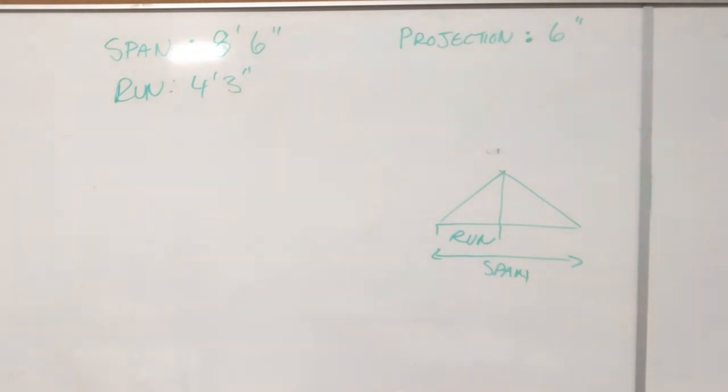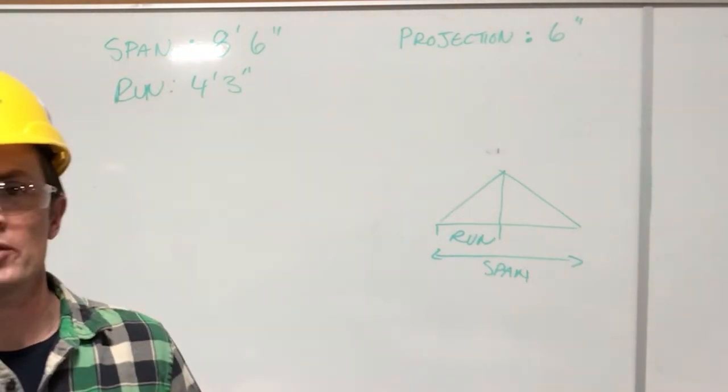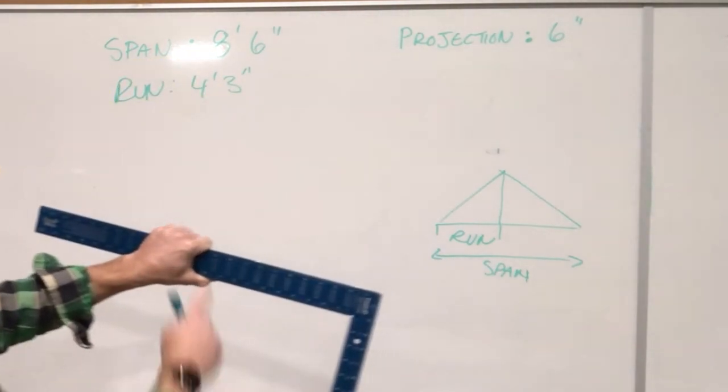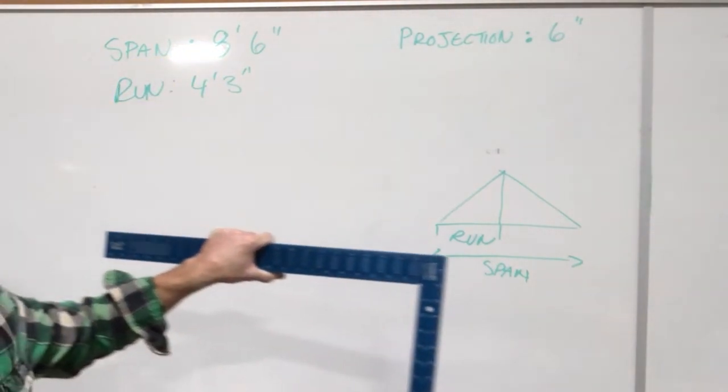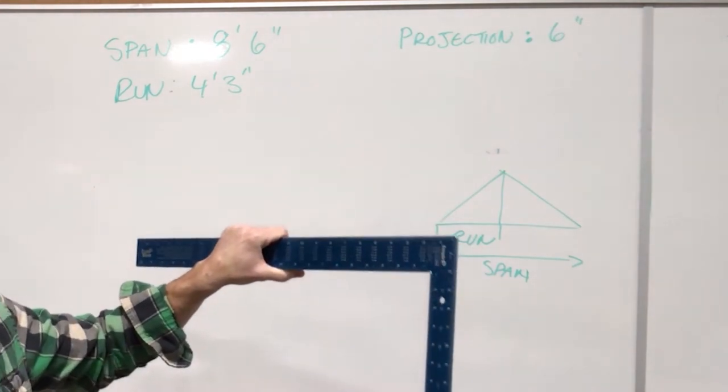So now I take a look at my slope, it's 6:12. The first thing that I want to do is I'm going to pick up my square when we're stepping this off. This is the level side that I'm going to have, so I always use the alliteration LLL, long level left.